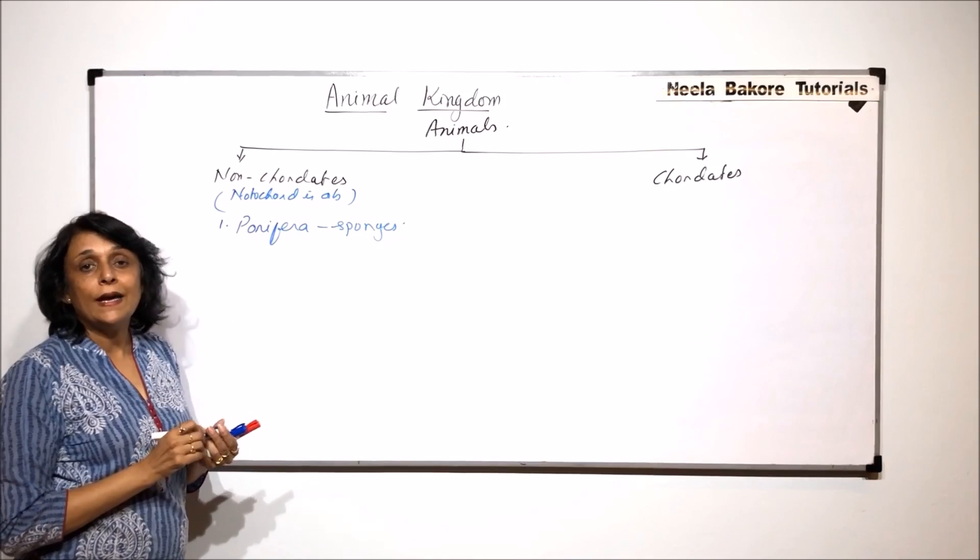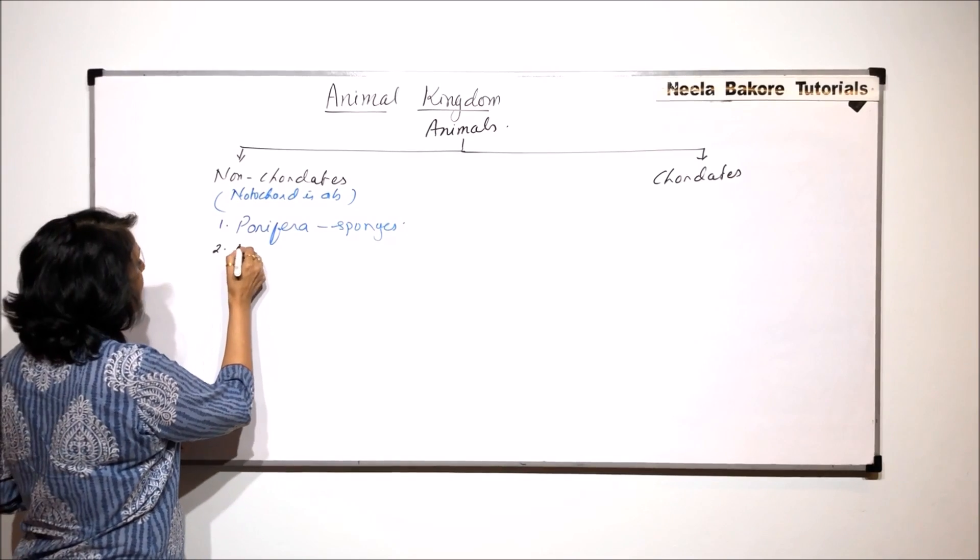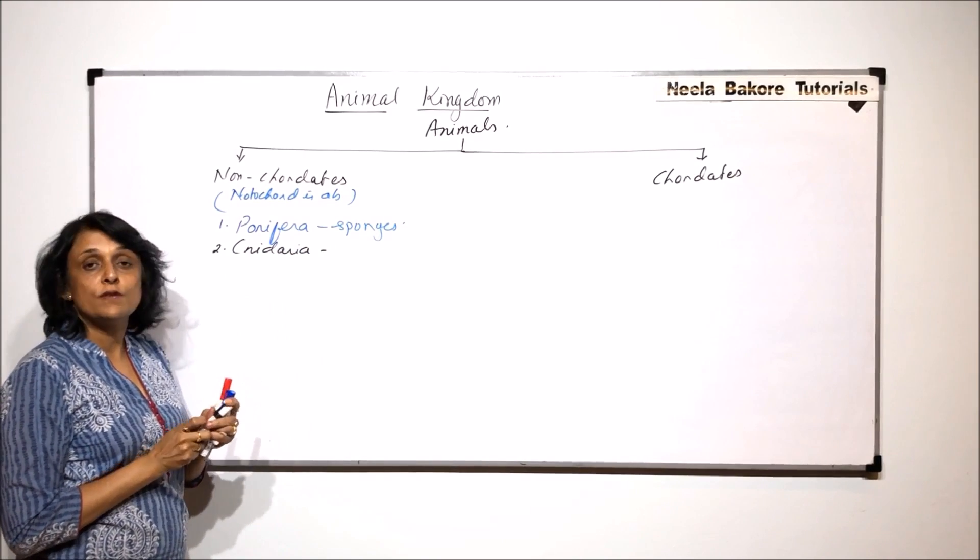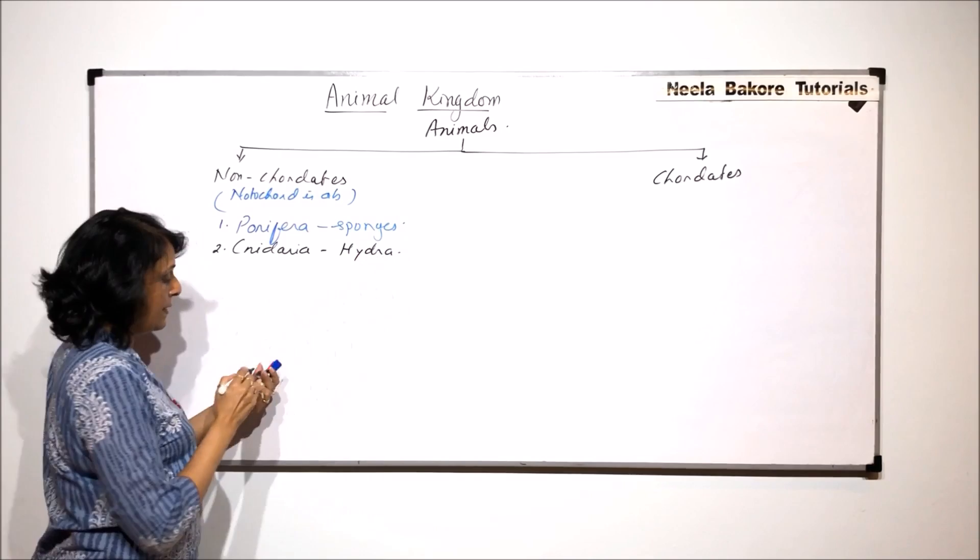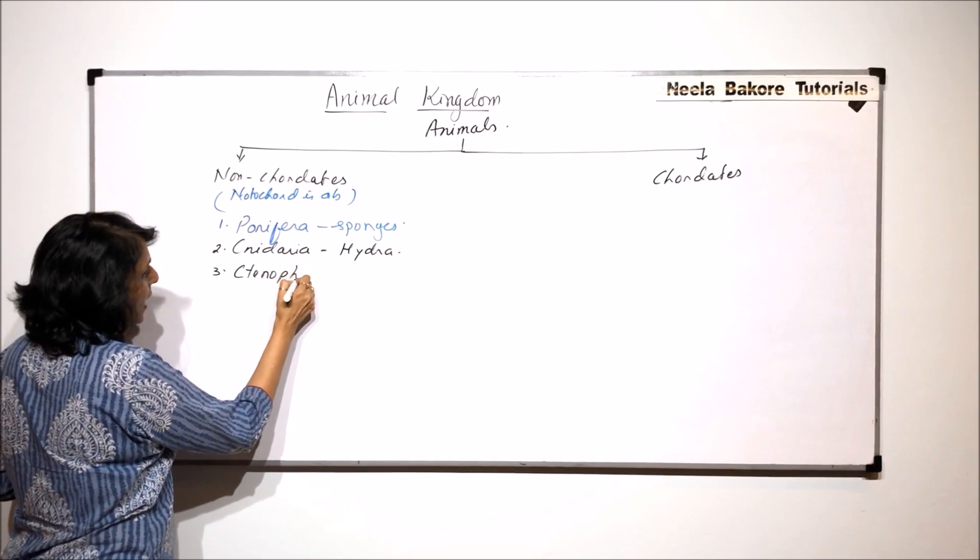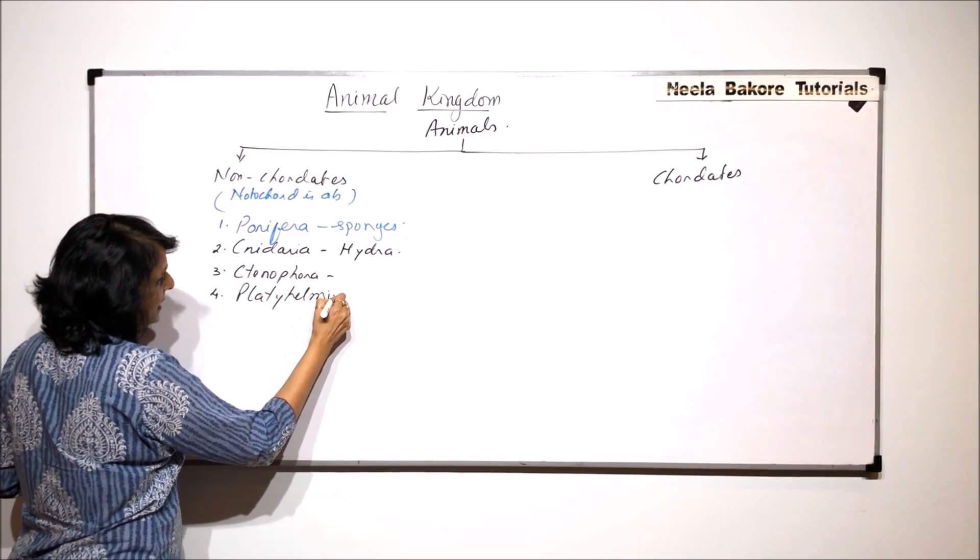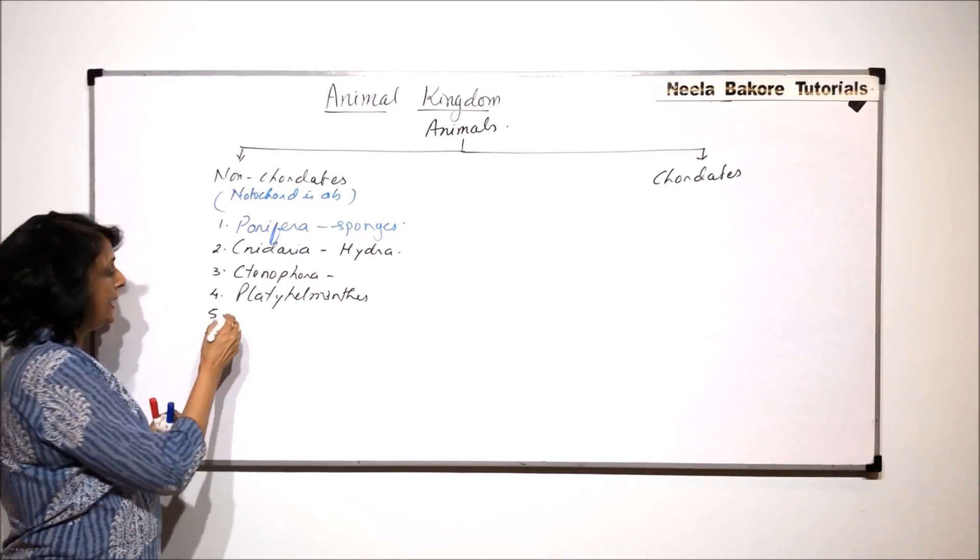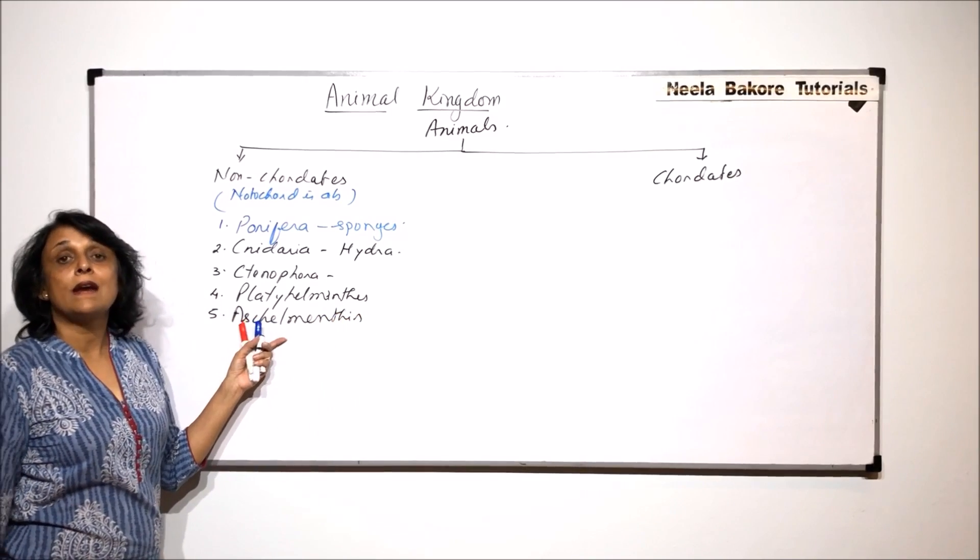We will be talking about all these phylums and their examples in detail. The second phylum after Porifera is Cnidaria. Its new name is Cnidaria. The older term which was given to this phylum was Coelenterata, and in this we include animals like Hydra. Then the next phylum is Ctenophora. Fourth one is Platyhelminthes. In this flatworms are included. The fifth one is Aschelminthes. In this roundworms are included.